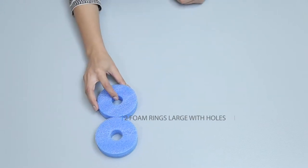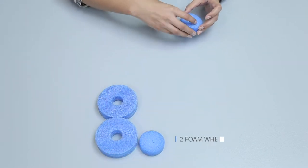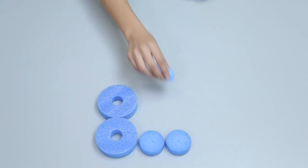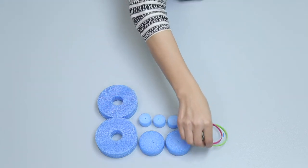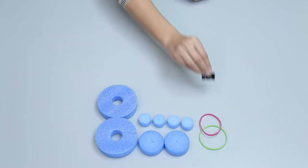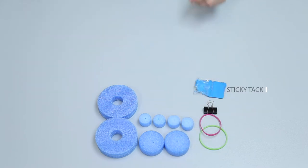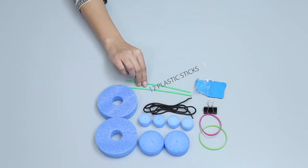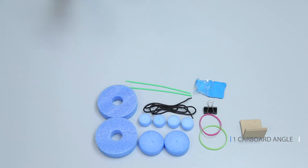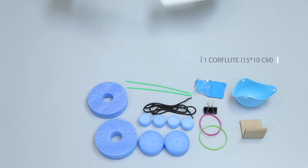Use two foam rings large with hole, two foam wheels, four foam wheels small, two rubber bands, one fold back clip, sticky tacks, one shoelace, two plastic sticks, one cardboard angle, one silicone poaching cup, one core flute 15 by 10 centimeter, one core flute 15 by 5 centimeter.